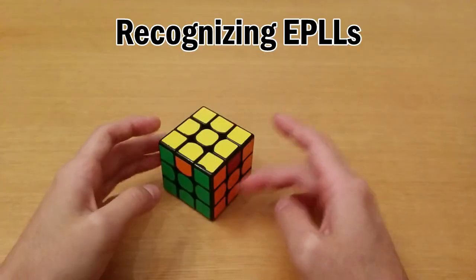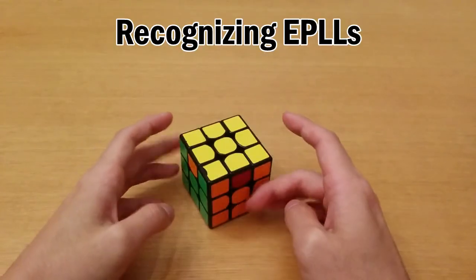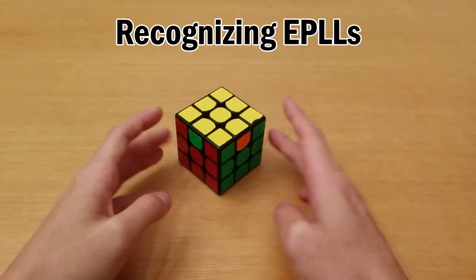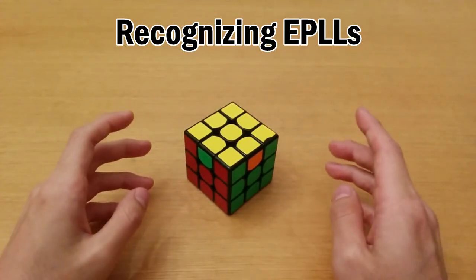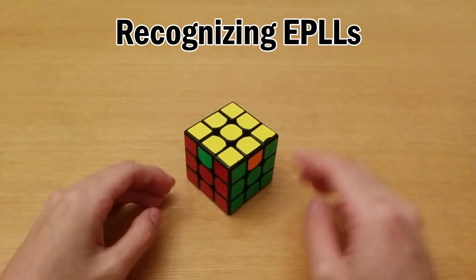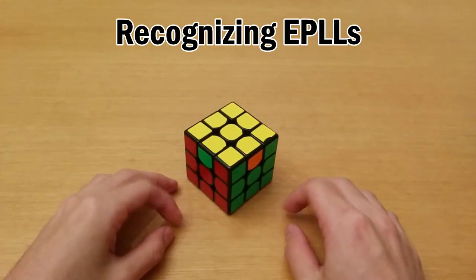Now when all the corners are solved it is very easy for most angles to recognize what EPLL you have but if you want to learn how to recognize it then I do talk about that in my video why you should learn COLL. If you really want to go see it it will be in the description.